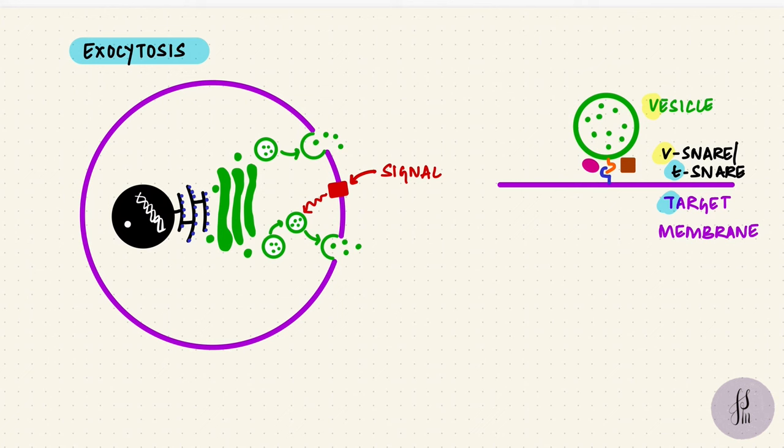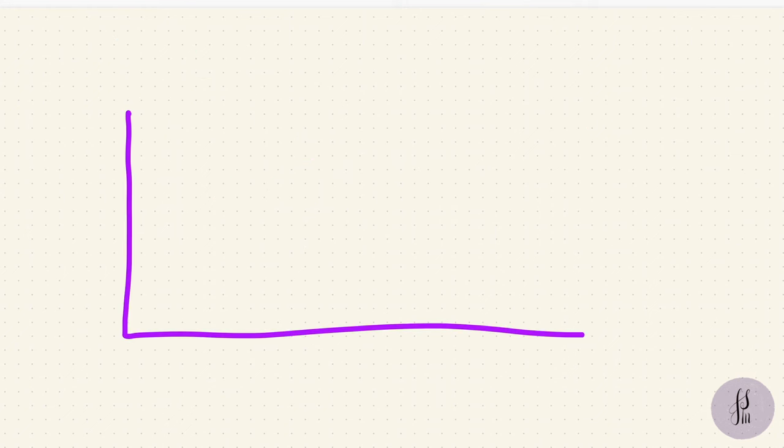Now this complex, it helps with docking of the vesicle onto the membrane so that the two can fuse and the contents of the vesicle can be released. There are actually different ways that this could happen. One would be where the vesicle briefly opens, releases what's inside and then closes.